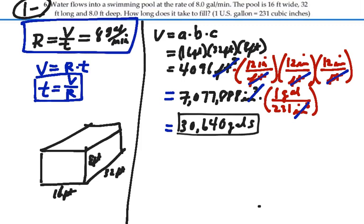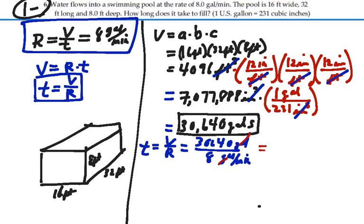Now we know that we're filling it at 8 gallons per minute. So the time is going to be equal to the volume divided by the rate. That would be 30,640 divided by 8 gallons. So this is gallons divided by 8 gallons per minute. The gallons will cancel out and we'll end up with minutes. So this is 3,830 minutes.